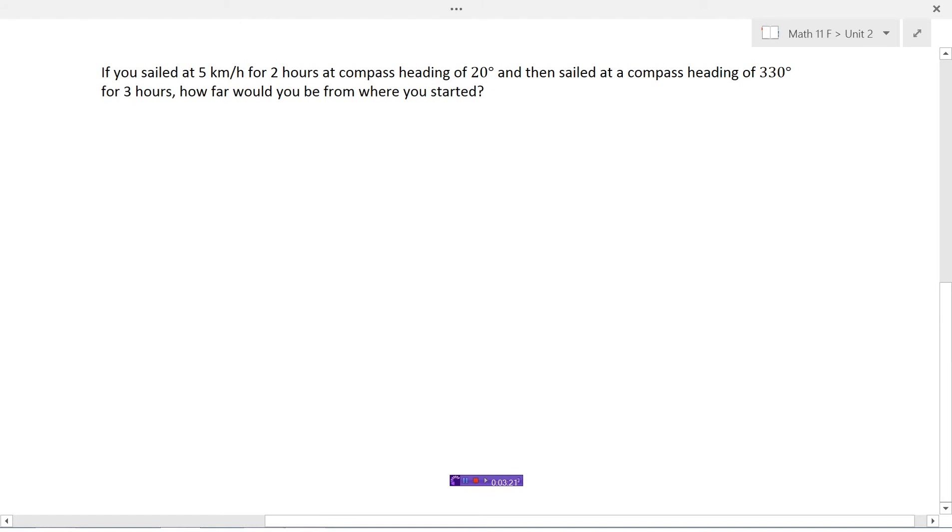The question is how far would you be from where you started? So we need to start by drawing a diagram. Let's just review our compass. North is zero degrees, east is 90 degrees, south is 180 degrees, west is 270. So 20 degrees is just east of north. If this is straight north here, this dashed line, the boat is angling off at about 20 degrees that way.